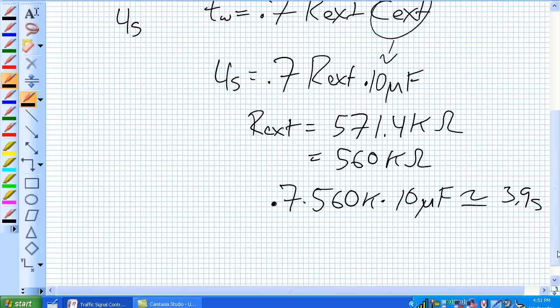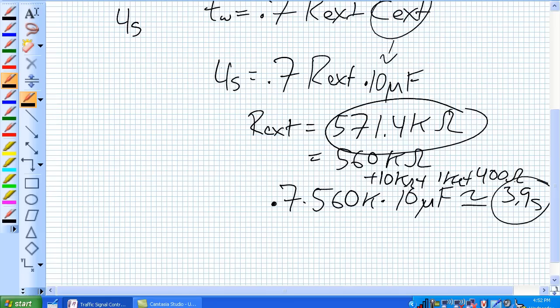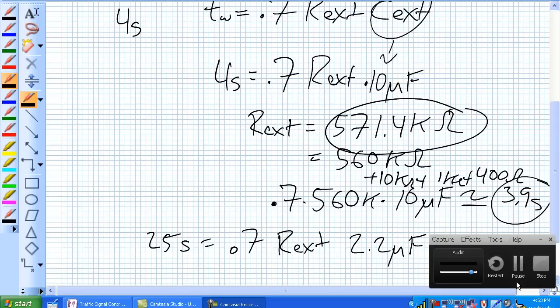If you wanted to, you really could add a 10K plus a 1K plus a 400-ohm resistor in series with that, making your R external 571.4 kilo-ohms. Or you could find some exotic capacitor and pay a lot of money for it. But 3.9 seconds, that's good enough for me. That's real close to four seconds, and that was what we wanted our yellow light to be.